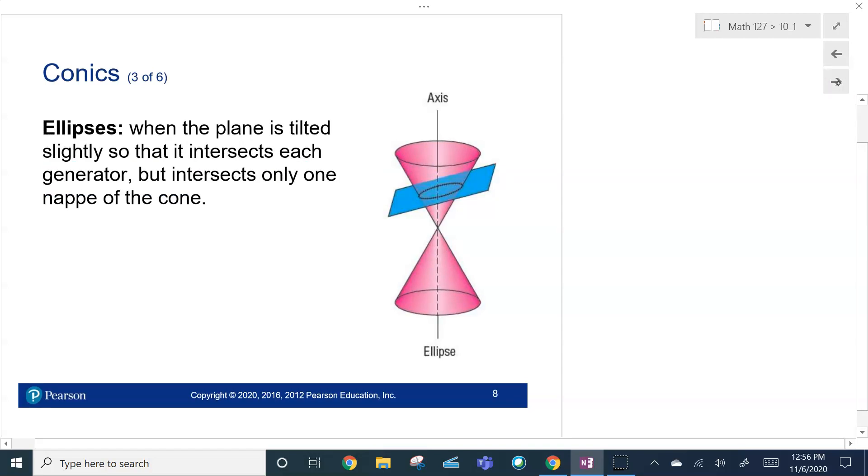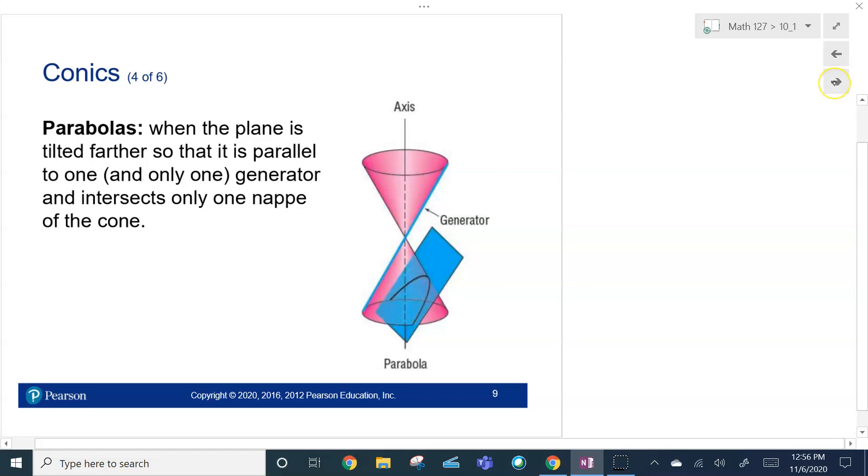An ellipse is when we're going to tilt that plane slightly, but it intersects only one of the cones. You notice the ellipse in there. That's an ellipse shape.